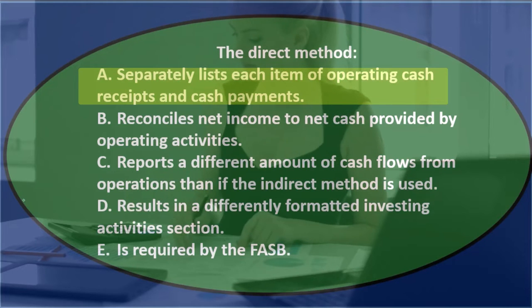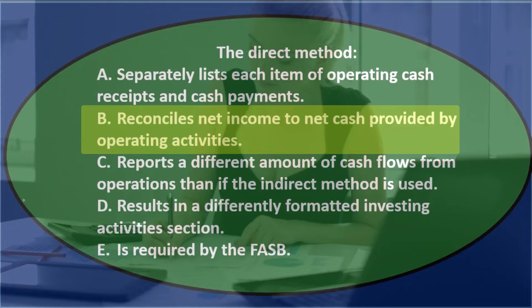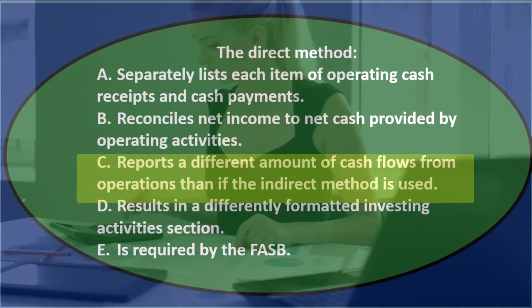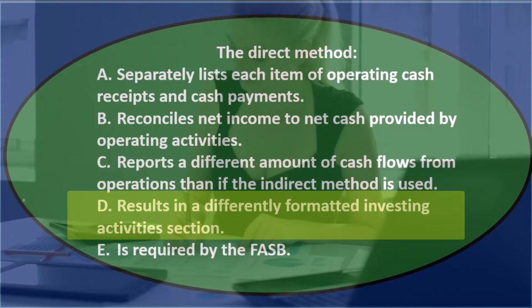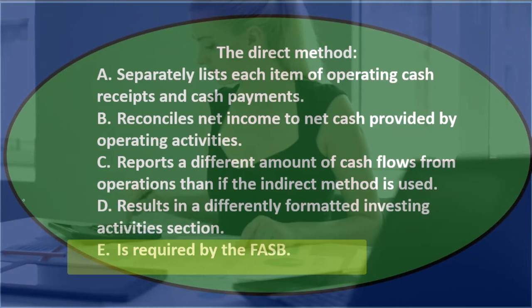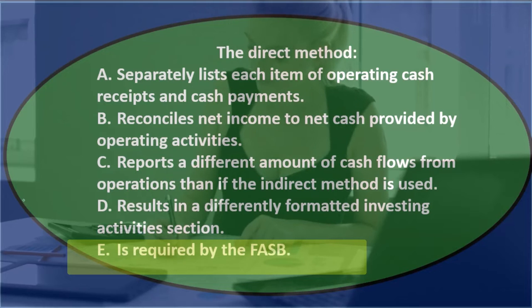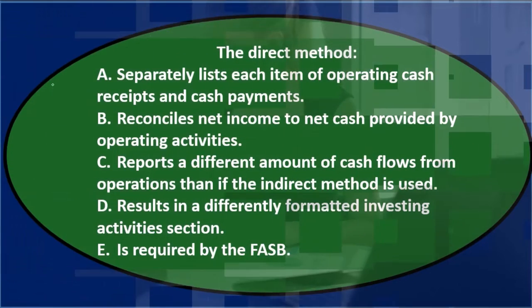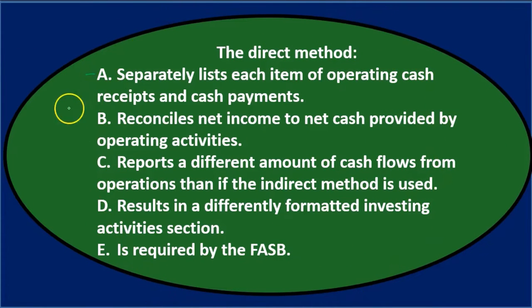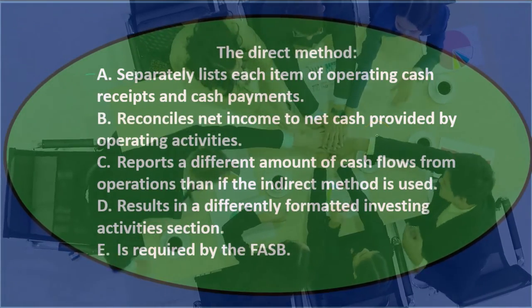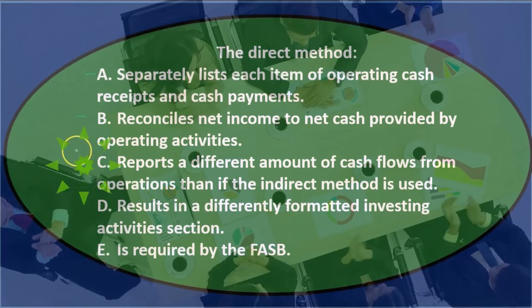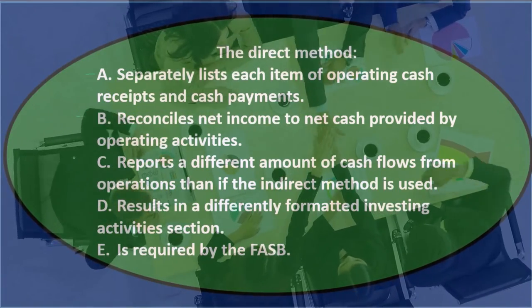Question 3: The direct method — A) separately lists each item of operating cash receipts and cash payments, B) reconciles net income to net cash provided by operating activities, C) reports a different amount of cash flows from operations than the indirect method, D) results in a differently formatted investing activities section, or E) is required by FASB.